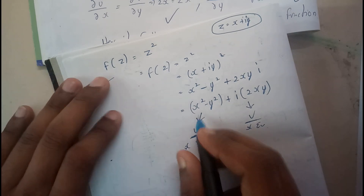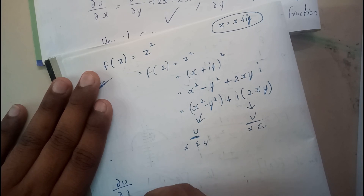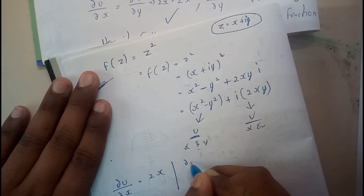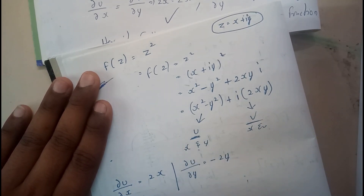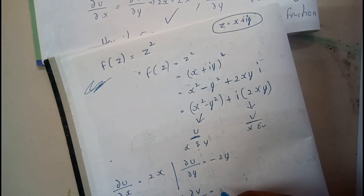Partial differentiation: ∂u/∂x = 2x. ∂u/∂y = −2y. ∂v/∂x = 2y. ∂v/∂y = 2x.